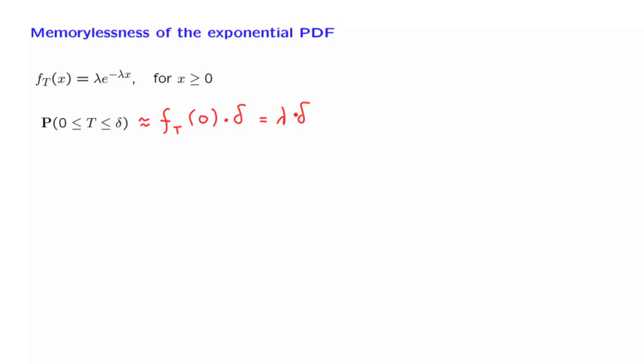What if we are told that the light bulb has been alive for t time units? What is the probability that it burns out during the next delta time units? Since a used but still alive light bulb is probabilistically identical to a new one, this conditional probability is the same as the probability that a new light bulb burns out in the next delta time units. And so this is also approximately equal to lambda delta.